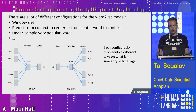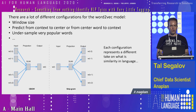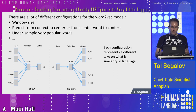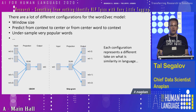There are different ways to train those models and they have many different parameters. You can look at different window sizes — meaning different numbers of words around the word that you're looking for context. You can predict either from the center word to the words around it, or from the words around it to the center. You can also decide how you sample very popular words and under-sample them in different ways. Each one of those different configurations gives you a little bit of a different angle on what context means in a language.